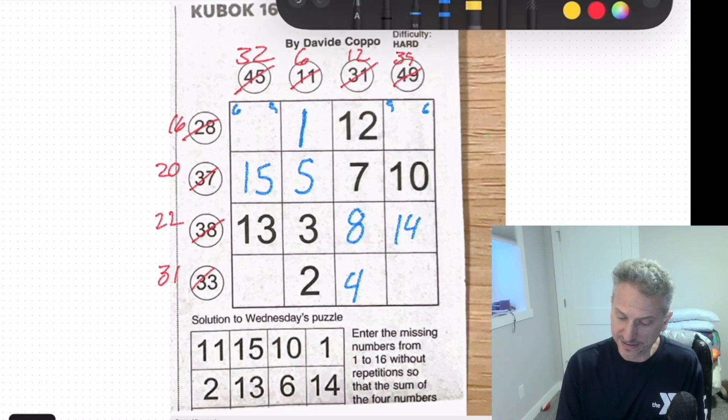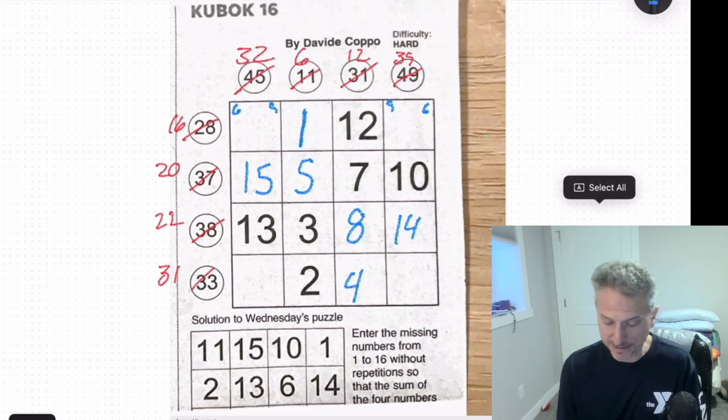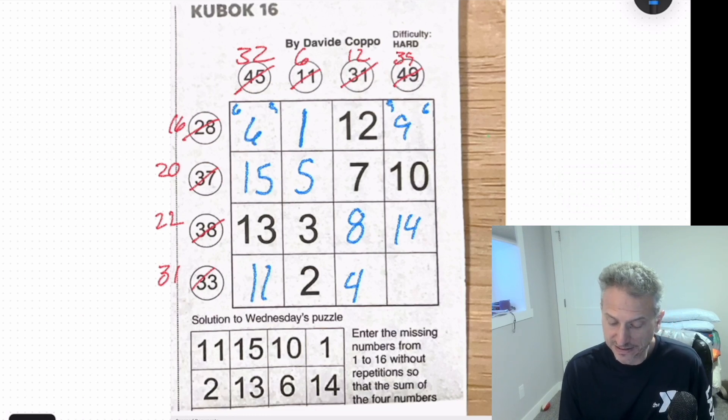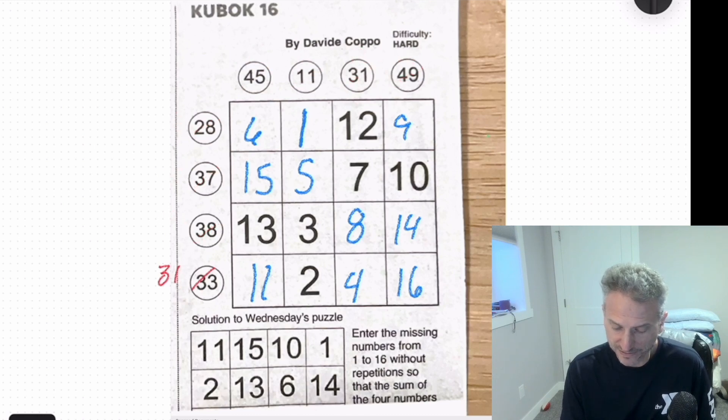And I think this puzzle is pretty much done. Six, nine, six, 15, 21, 32. That would be 11, nine, 15, 24. So eight, we can't do that. So this is 11, six, nine, 11, 15, and 16. And that is a very straightforward Kubok 16.